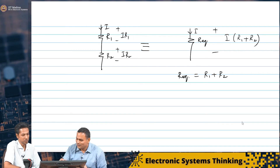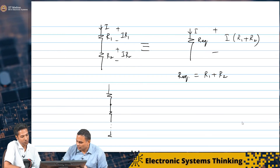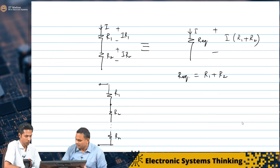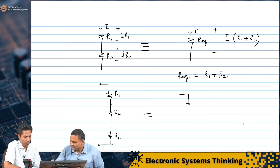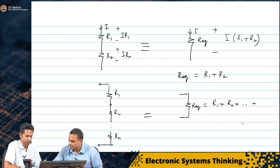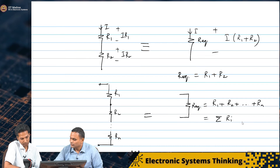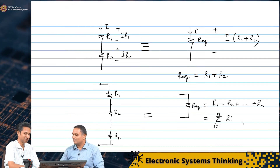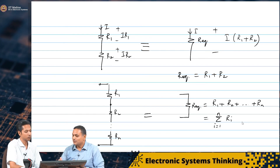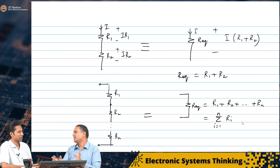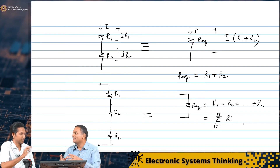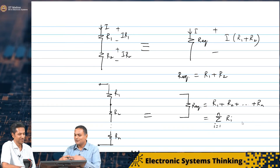Now we can extend this to N resistors in series — R1, R2, and so on till Rn. Between the two ends this is the same as one single R_equivalent, which is nothing but the sum of all the resistors: R_eq = Σ Ri from i=1 to N. Now we can use this in the circuit. This actually helps you a lot in simplifying circuits — we started off from a very simple circuit, and only when things got complicated did we have to use nodal analysis, mesh analysis. Now this makes it a lot easier.